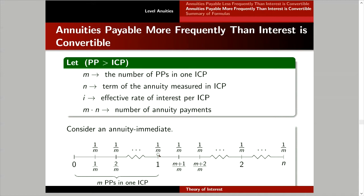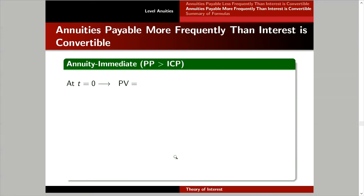We want to get the present value from this timeline. We carry all amounts to time 0. For the first payment of 1 over m, you multiply it by v raised to 1 over m. For the second payment, you have 1 over m times v to the 2 over m, because it passes two subdivisions. And so on.